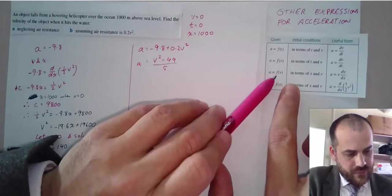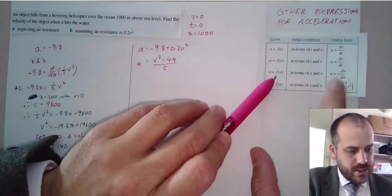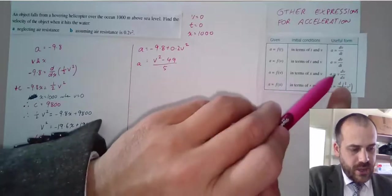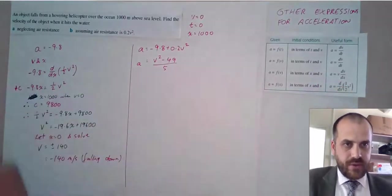We still have these initial conditions, which means that we can use this useful form for getting it in terms of V and X.